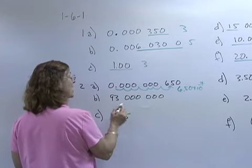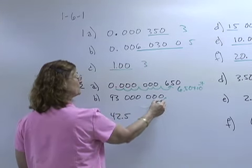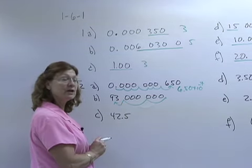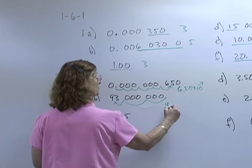For B, I'm moving this decimal three, six, seven places. The number is greater than one, so it has to be a positive exponent.